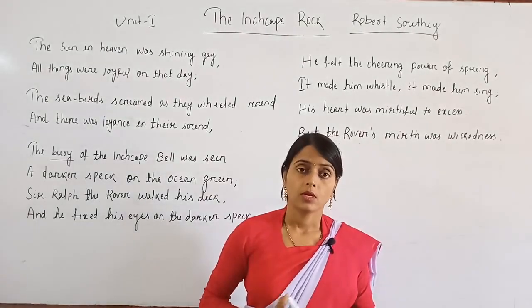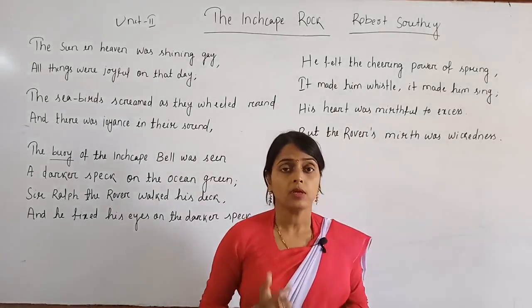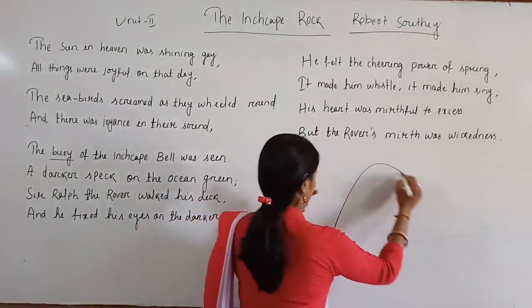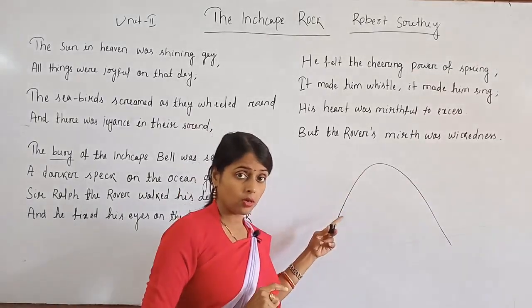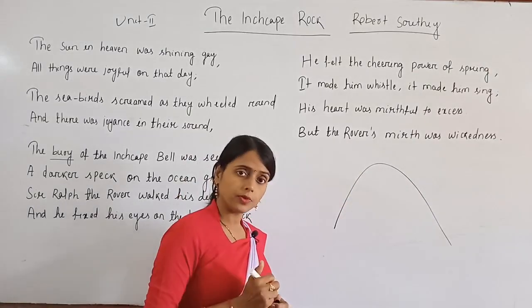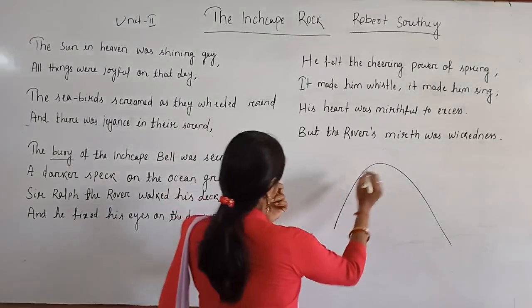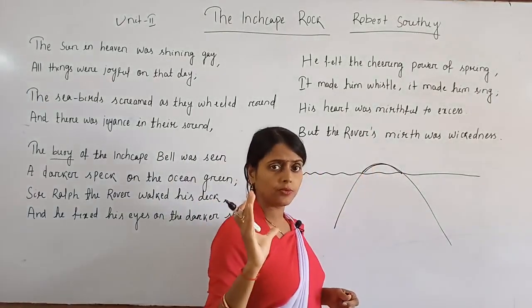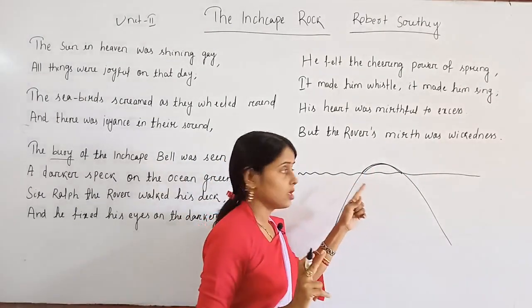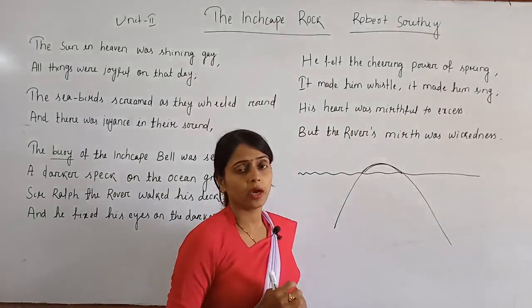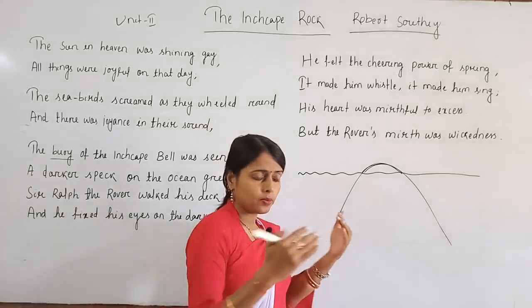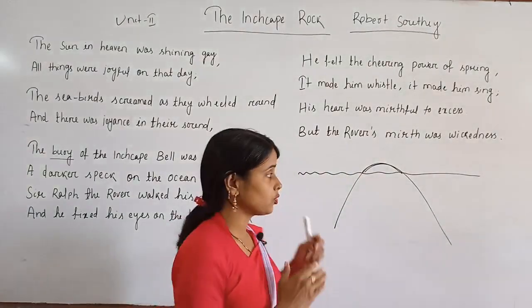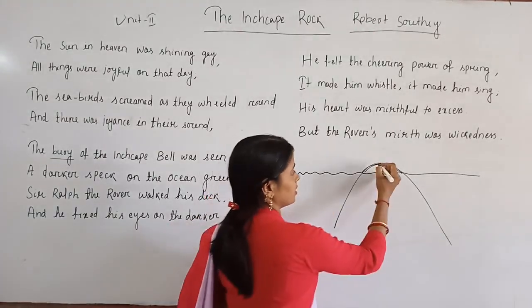I introduced you to a person — the Abbot of Aberbrothok. He was a saint. The Inchcape Rock was special: only a few inches of the rock were visible above the surface of the water. So the mariners were unable to find the rock when there were high tidal waves or when the sea was rough, and as a result they would collide against the rock, losing their lives and property.